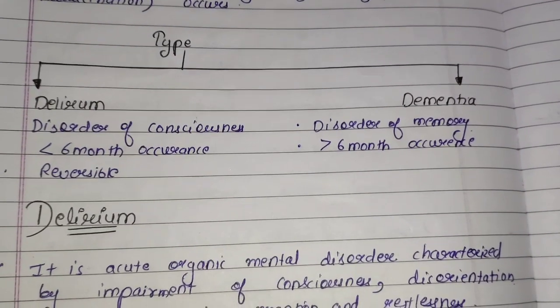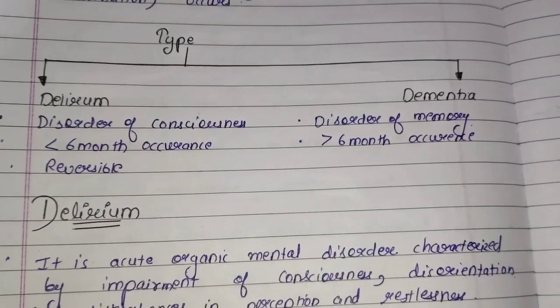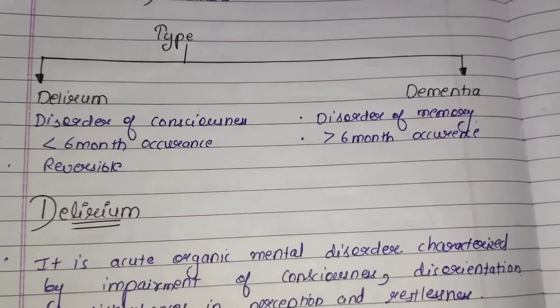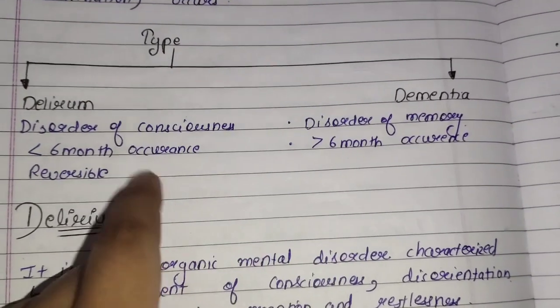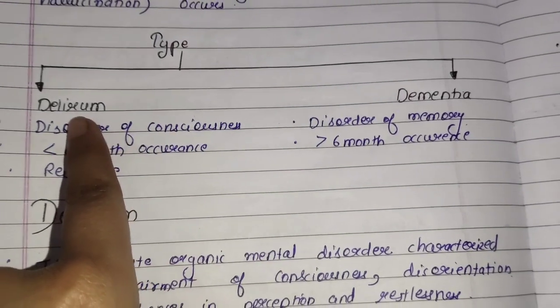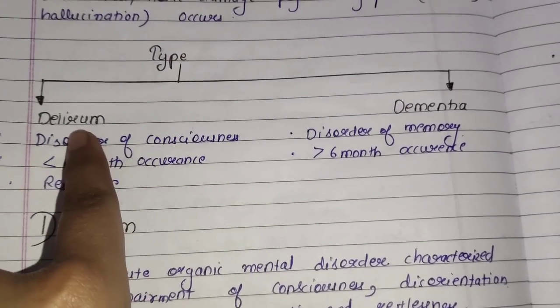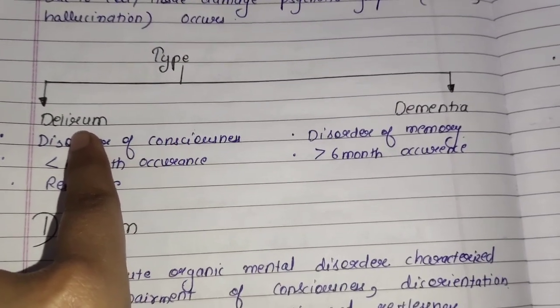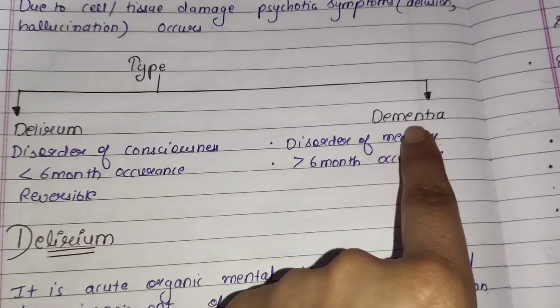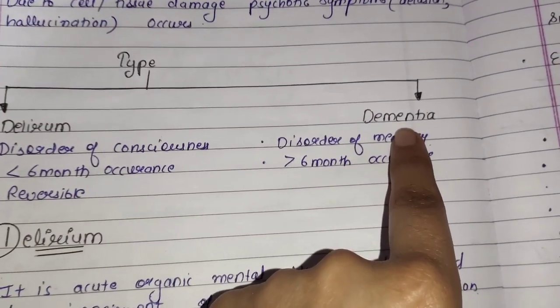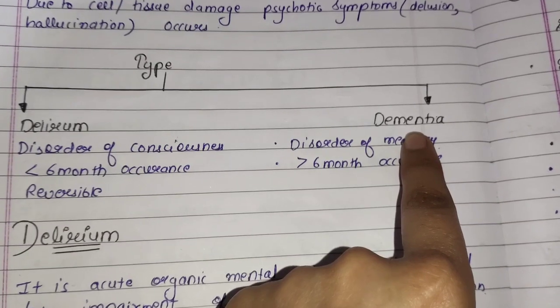The organic brain disorder is mainly of two types. First one is delirium and the second one is dementia.